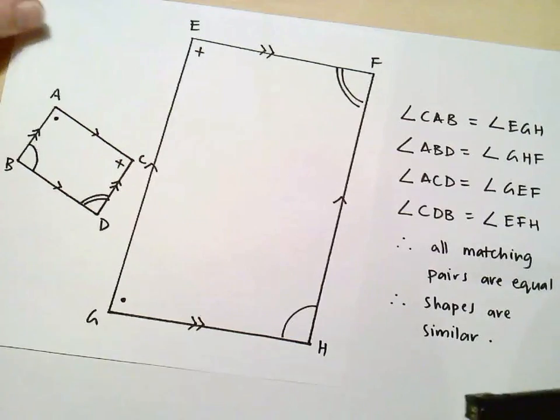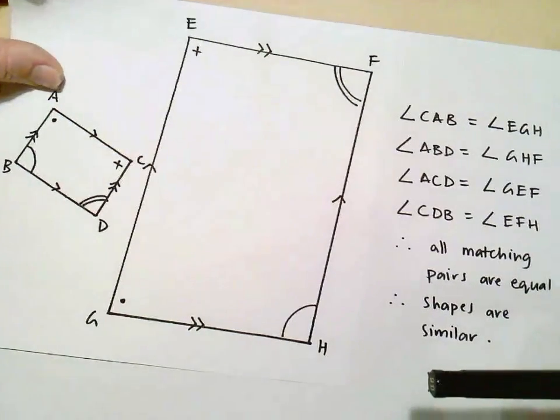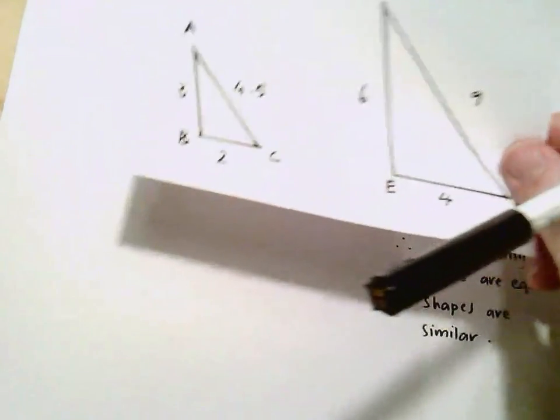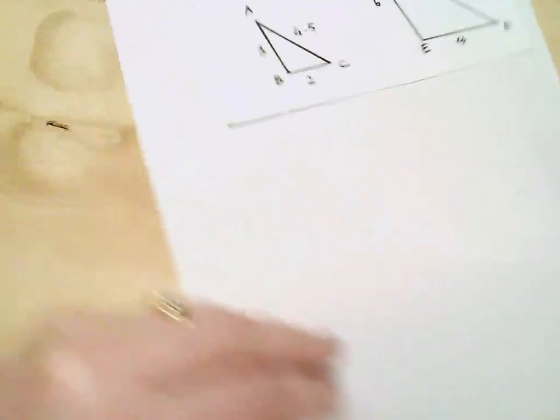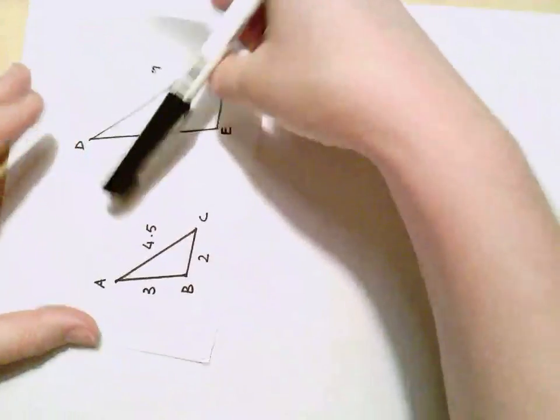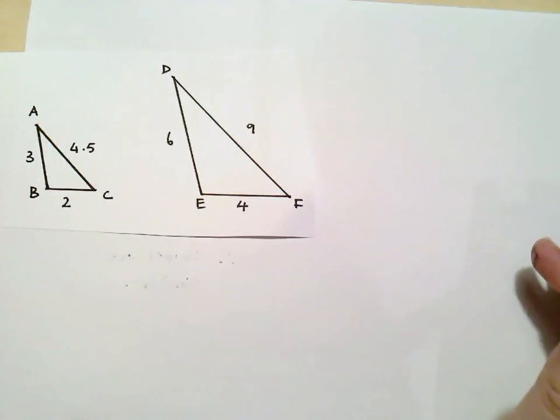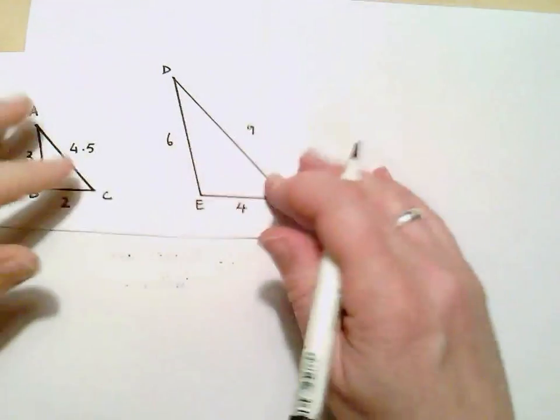So that's our first example. We're just going to look at one other example and then you're all going to have a go at some questions yourself. Let's go back to this example that we were looking at before. So these are our two triangles. Again,